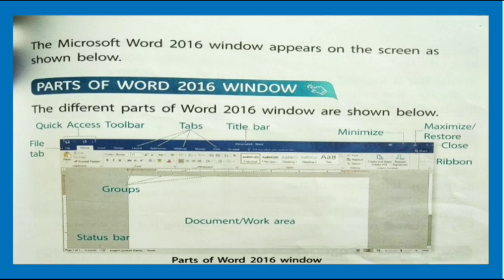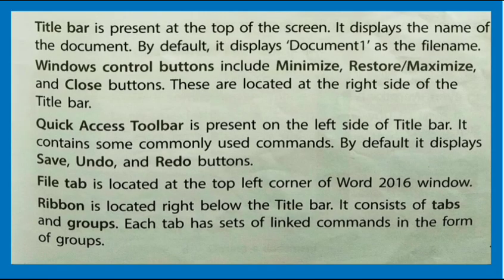The Microsoft Word 2016 window appears on the screen. The different parts of the Word 2016 window are: File Tab, Quick Access Toolbar, Tabs, Title Bar, Minimize, Maximize or Restore, Close, Ribbon, Groups, Status Bar, and Document or Work Area.